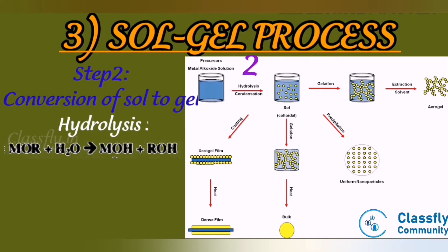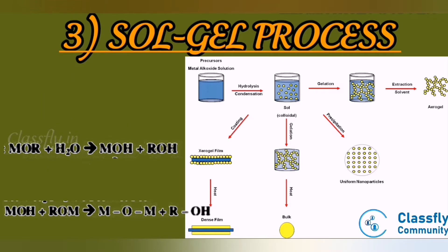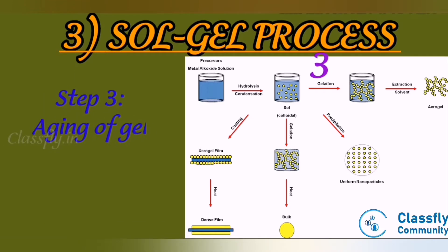Hydrolysis: M-OR + H₂O → M-OH + ROH. Condensation: M-OH + ROM → M-O-M + ROH. Step 3 is aging of gel. The gel, on aging for a known period of time, finally condenses to nanoscale clusters of metal hydroxide.